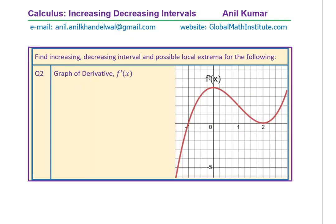Question number fourteen: find the increasing and decreasing intervals and possible local extrema for the following. You are given the graph of the derivative — not the function itself, but its derivative. You have to find the increasing interval, decreasing interval, and possible local extrema for the function. Very tricky question — think and solve.